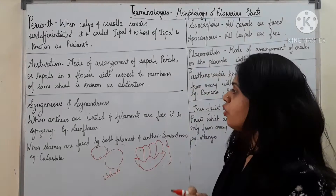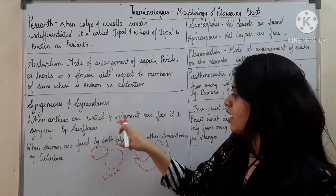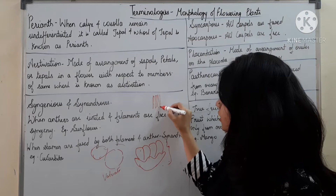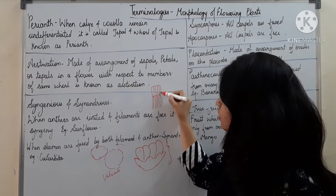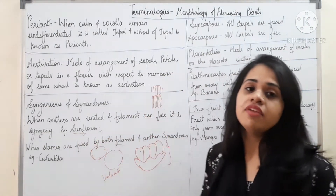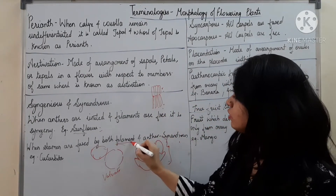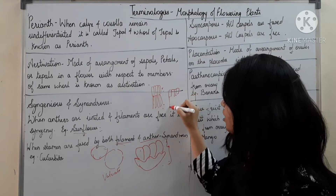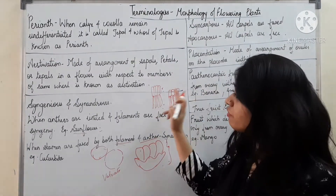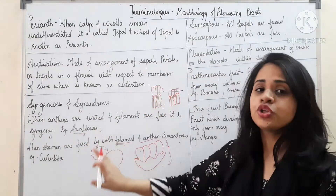Syngenesious means anthers are united and filaments are free. You can see in the diagram that the filaments are free and the anthers are united. The example is sunflower. Synandrous means stamens are fused by both filament and anther — both are fused. The example for synandrous is Cucurbita.